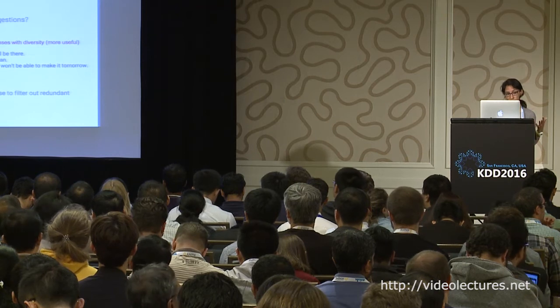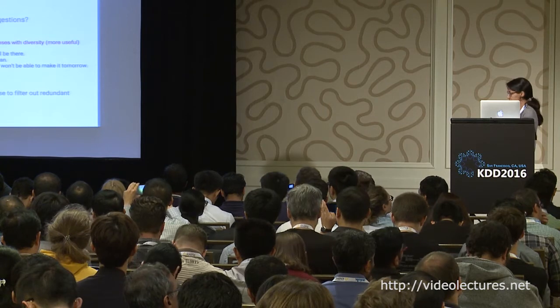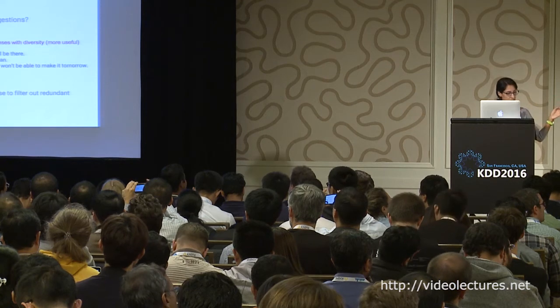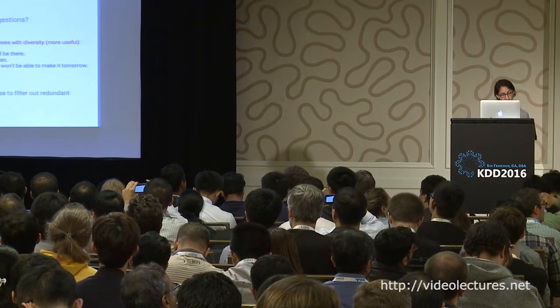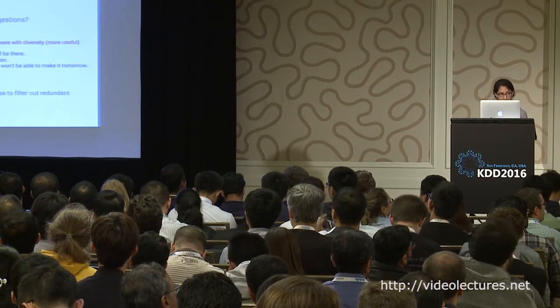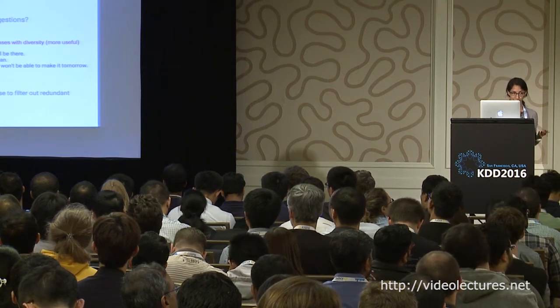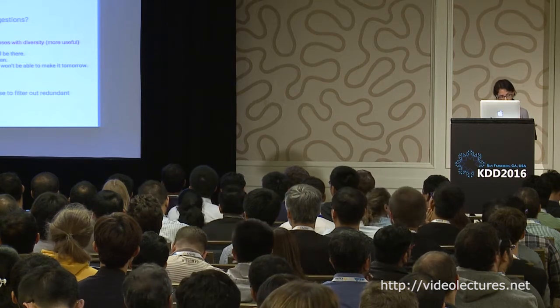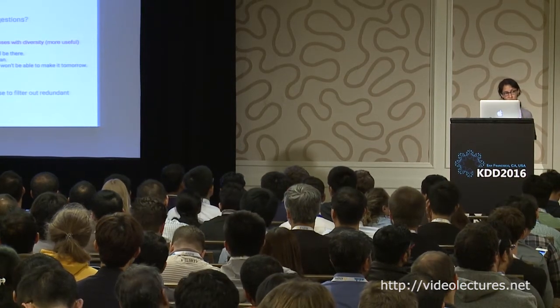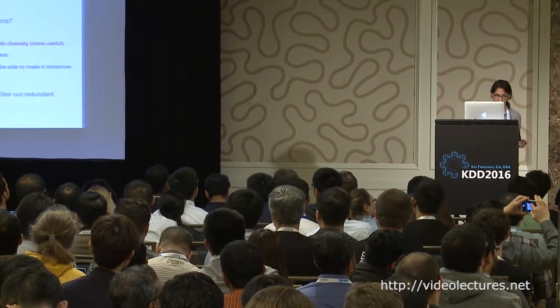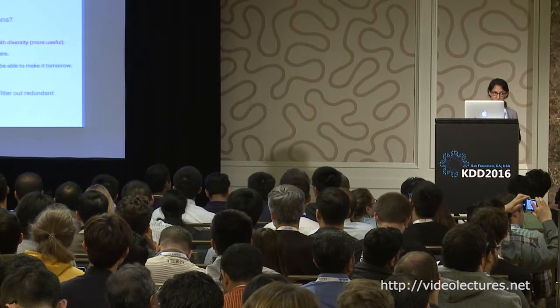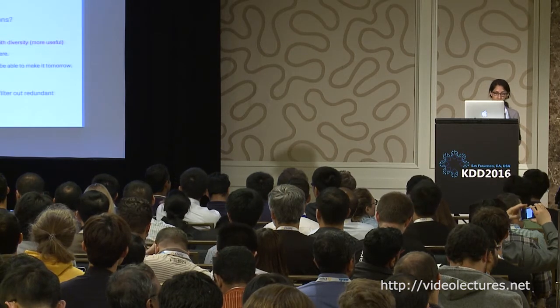The last challenge, which I'll spend more time on, is diversity. To understand why we care about diversity: if you receive 'Can you join tomorrow's meeting?' and we just feed that to the model, the top responses would be 'yes, I'll be there,' 'yes, I will be there,' and 'I'll be there.' This is not what we want to show users, because we want to cover as many possible scenarios as possible. If you don't want to say 'yes, I'll be there,' you probably don't want 'yes, I will be there' either. We need the responses to be non-redundant.